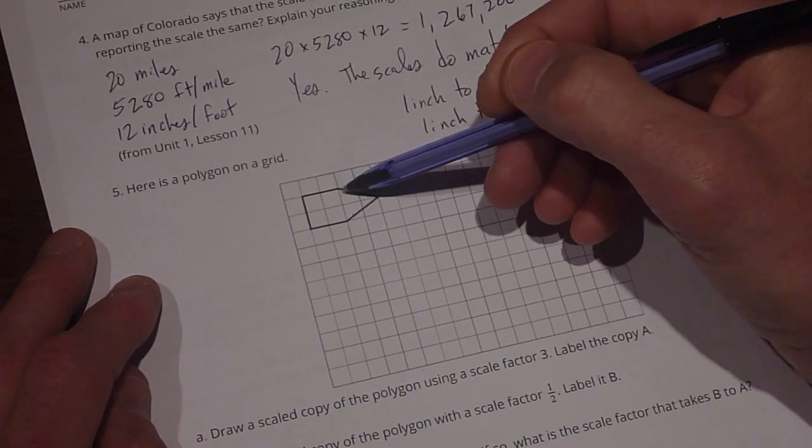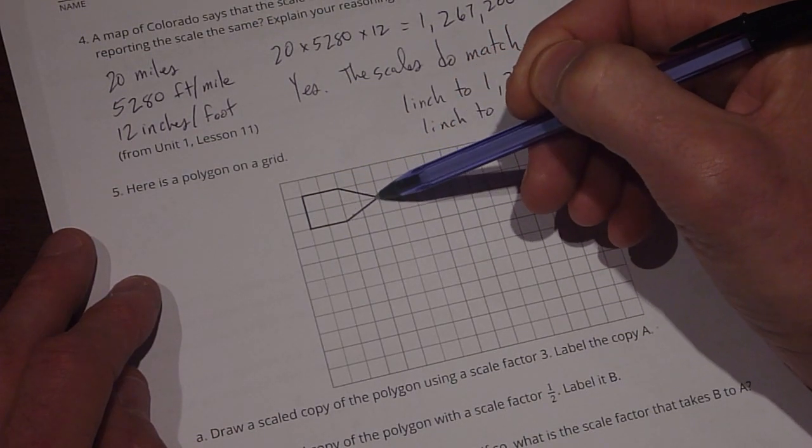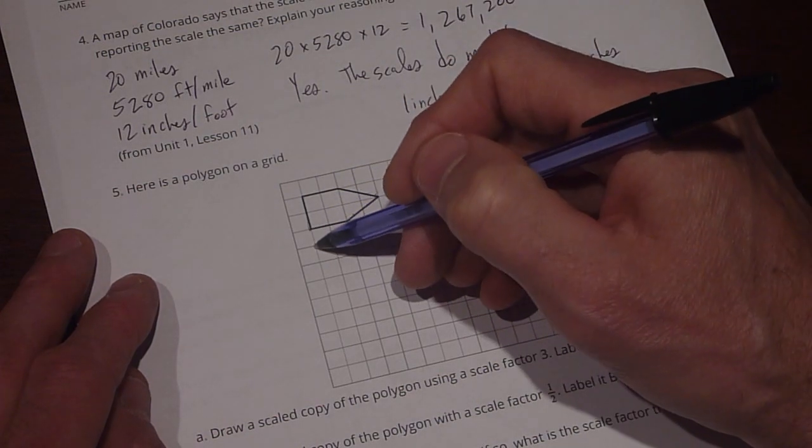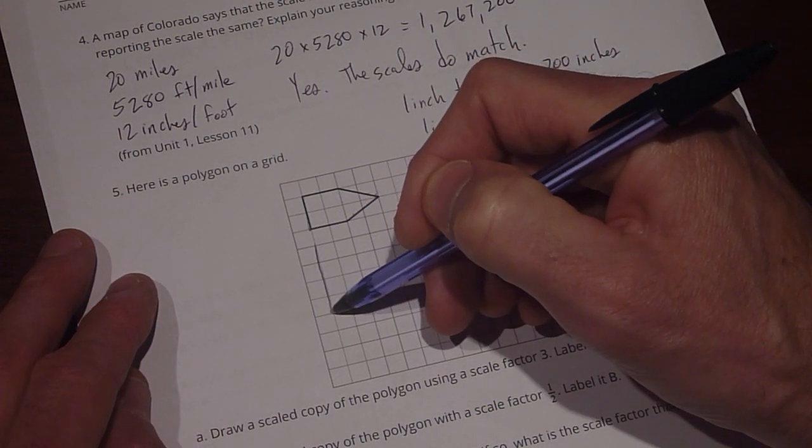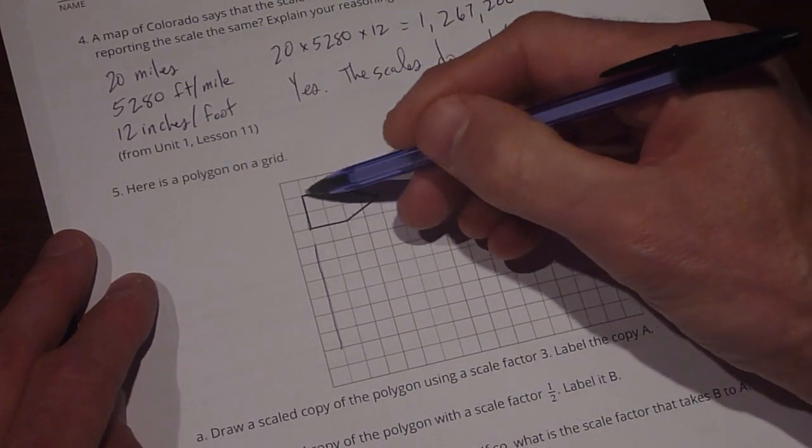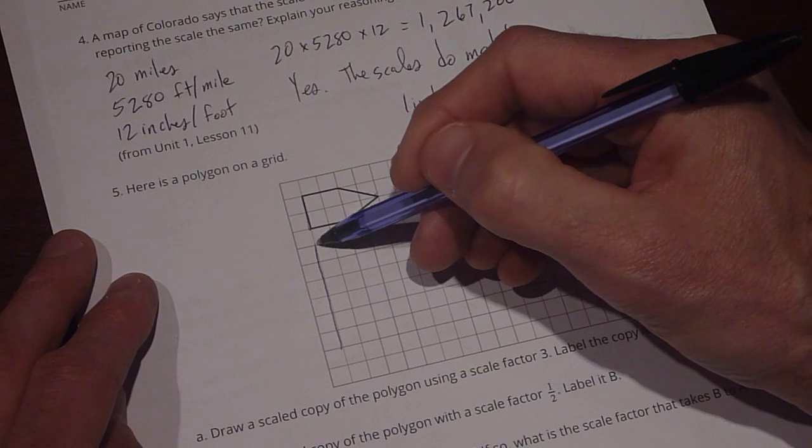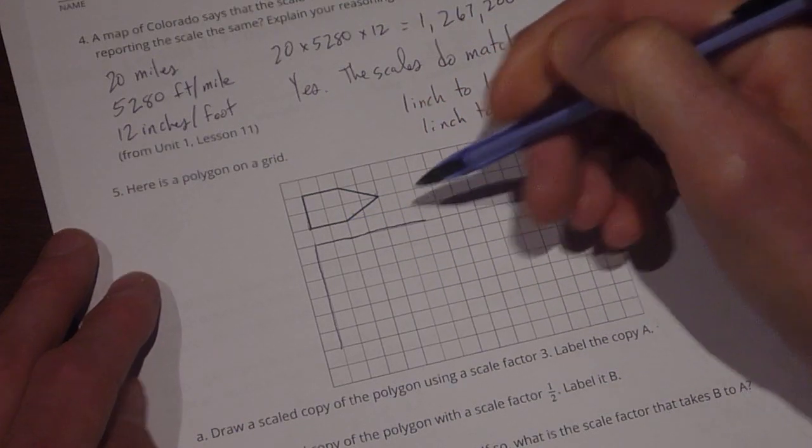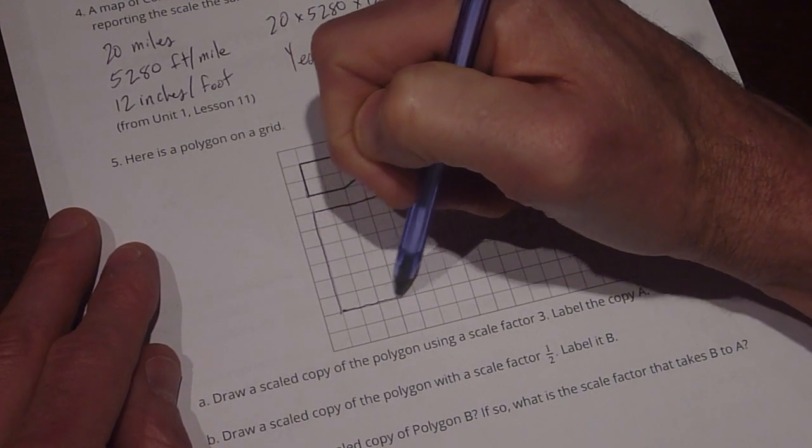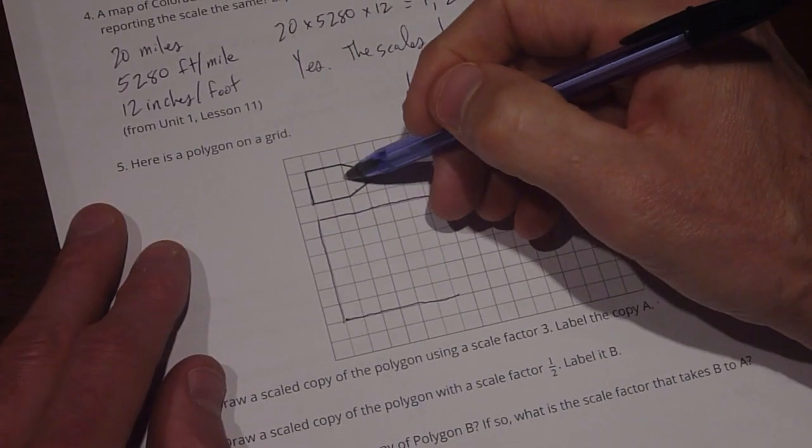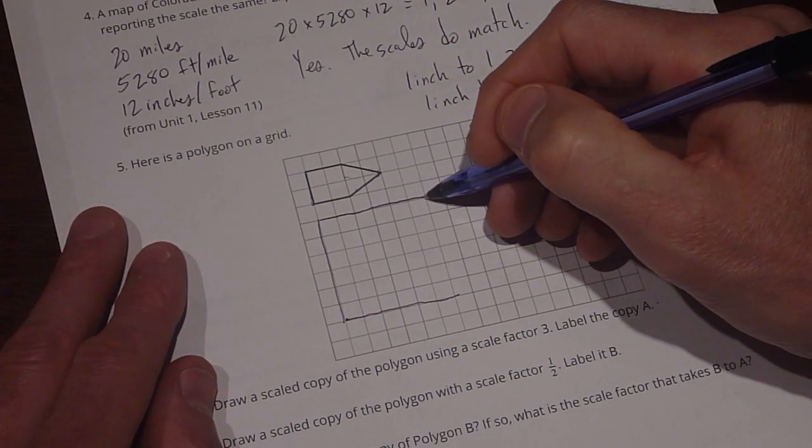So this is 2. We have 2 here, 2 here. This goes down 1 and over 2 to get to this point. So I'm going to start with my side 2 and that's going to be multiplied by 3. So it's going to be 2, 4, 6 units. And then this side here is going to be 6 units because we're multiplying by 3. 2, 4, 6 units. And then down here 2, 4, 6 units.